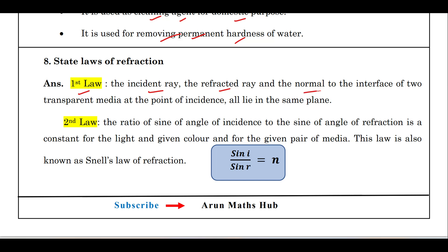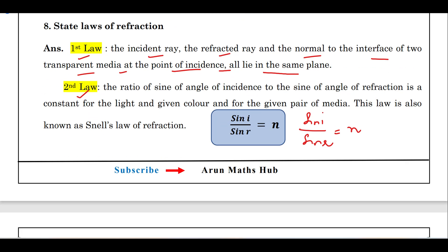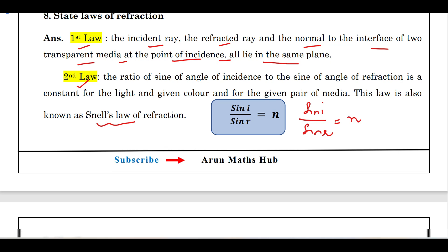State the laws of refraction. The first law states that the incident ray, the refracted ray, and the normal to the interface of two transparent media at the point of incidence all lie in the same plane. The second law states that the ratio of the sine of the angle of incidence to the sine of the angle of refraction is constant — that is, sin i / sin r = n, where n is the refractive index. This law is also called Snell's law.